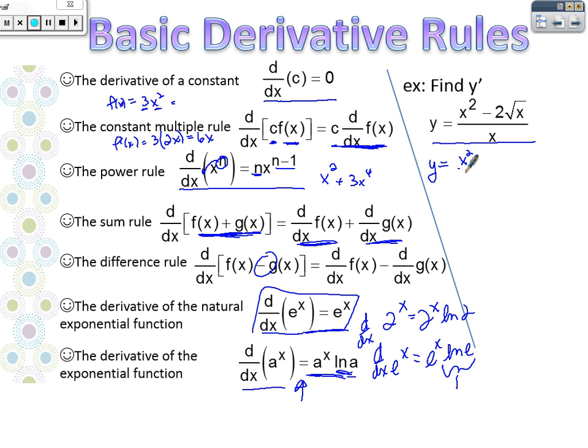our first step is going to be rewriting. This would be x squared over x minus 2 square root of x over x, if I'm rewriting. And just to simplify that, x squared over x is x and minus 2. And this would be,